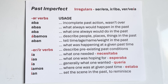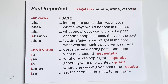It works for ER verbs and IR verbs alike. The verb vivir, to live: vivía, vivías, vivía, vivíamos, vivían. For example, vivíamos por la costa — we used to live along the coast. Those are your endings, and they go on the verb stem — what's left after you take off the infinitive ending of AR, ER, or IR.